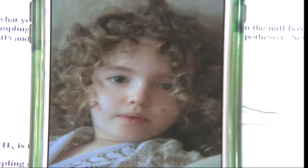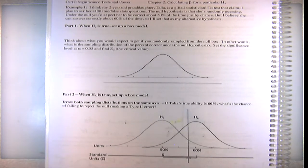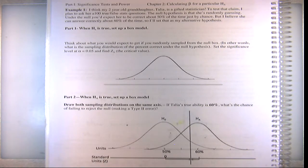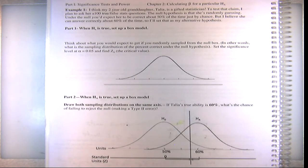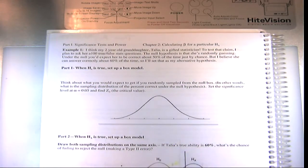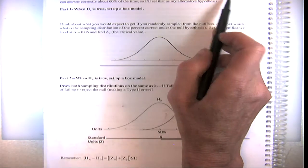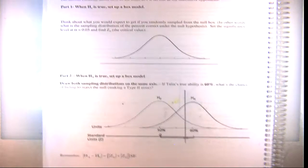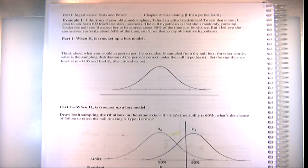She's three in that picture — a lively little girl with a lively mind. She's completely bilingual. So: I think my two-year-old granddaughter Talia is a gifted statistician. To test that claim, I plan to ask her 100 true/false stats questions.